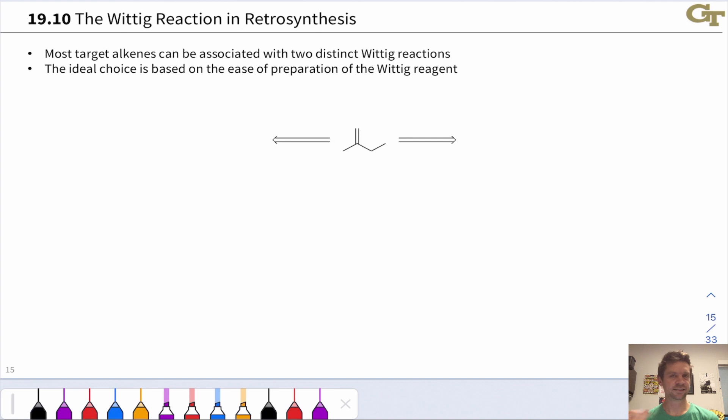If we'd like to synthesize an alkene, we can now think about the Wittig reaction in the reverse direction to create an alkene from a carbonyl compound. And so in applying the Wittig reaction in multi-step synthesis, we're going to want to think about working alkenes backwards to ketones or aldehydes.